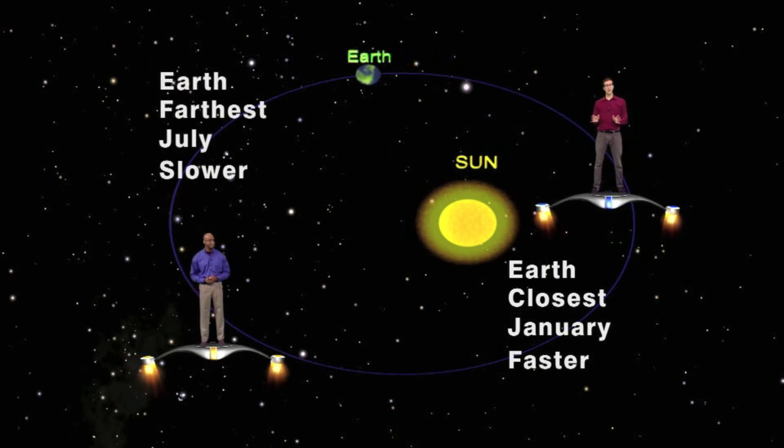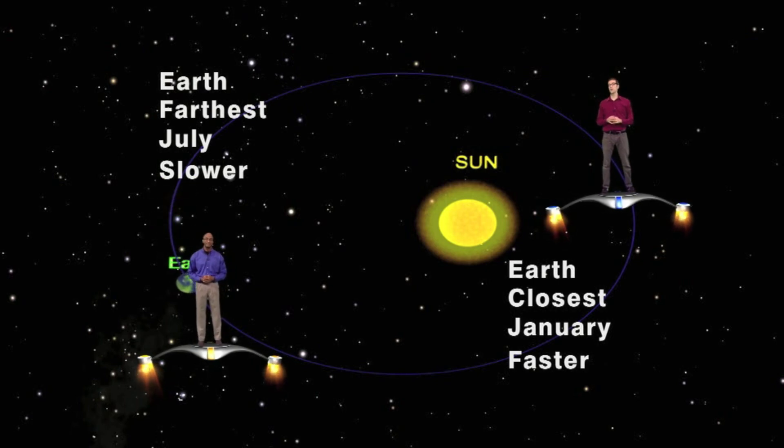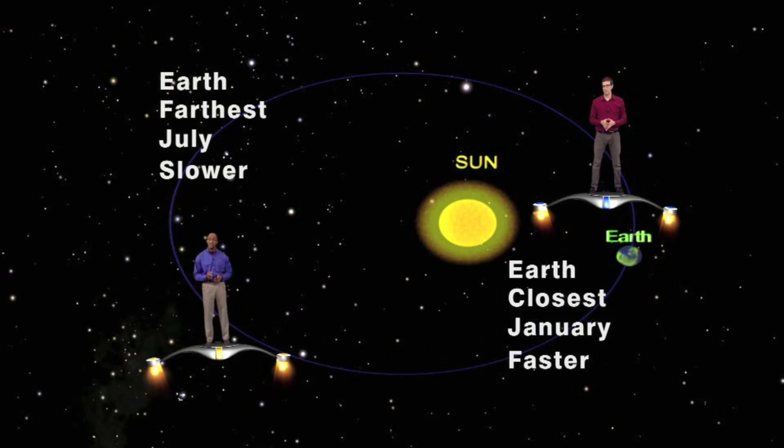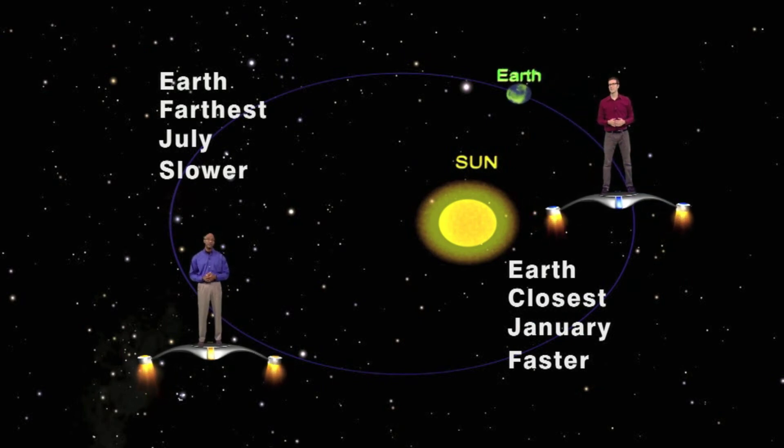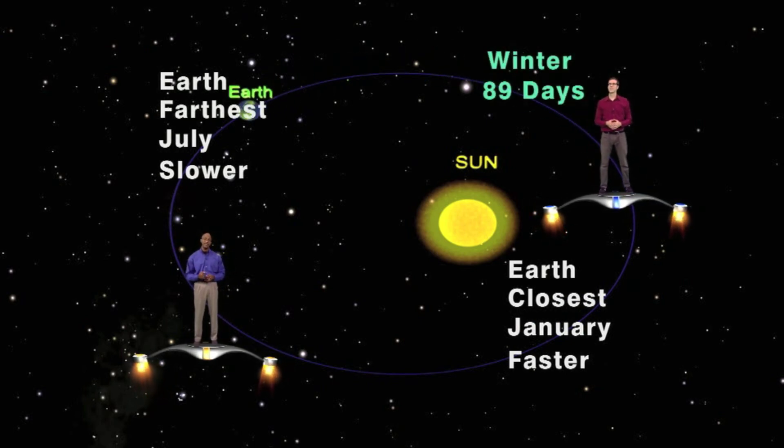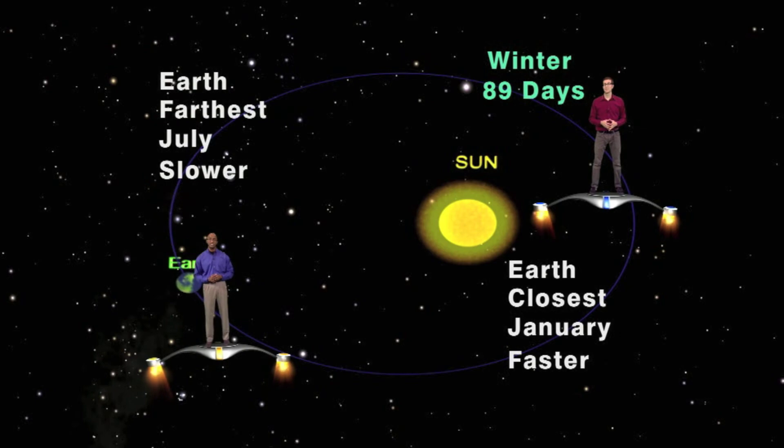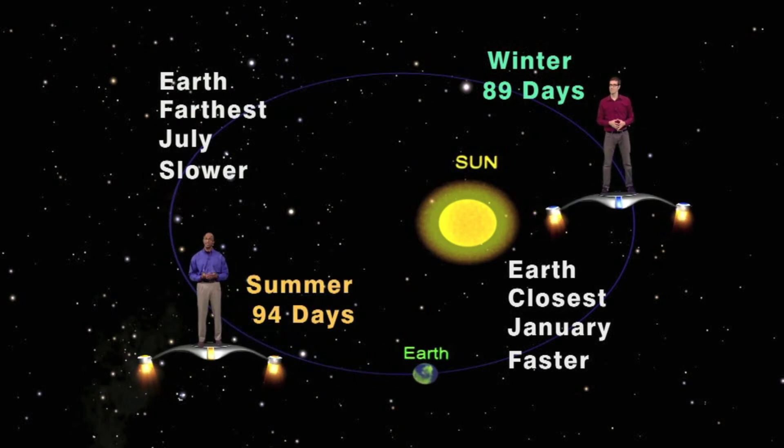And believe it or not, the Earth is closer in winter and travels over 2200 miles per hour faster than it does in summer. So fast, in fact, that winter, which is 89 days long, is 5 days shorter than summer, which is 94 days long, for the Northern Hemisphere.